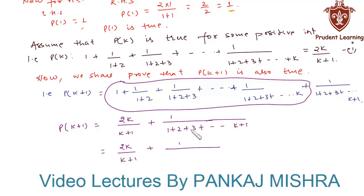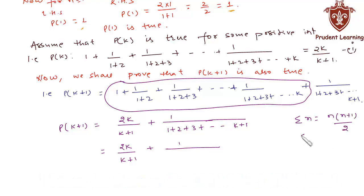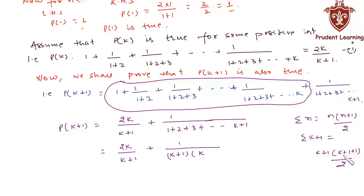In the denominator we have the sum of the first (k plus 1) natural numbers. We know that the sum of first n natural numbers is n(n plus 1) upon 2. So the sum of (k plus 1) natural numbers is (k plus 1)(k plus 2) upon 2. This gives us 2k upon (k plus 1) plus 2 upon (k plus 1)(k plus 2).